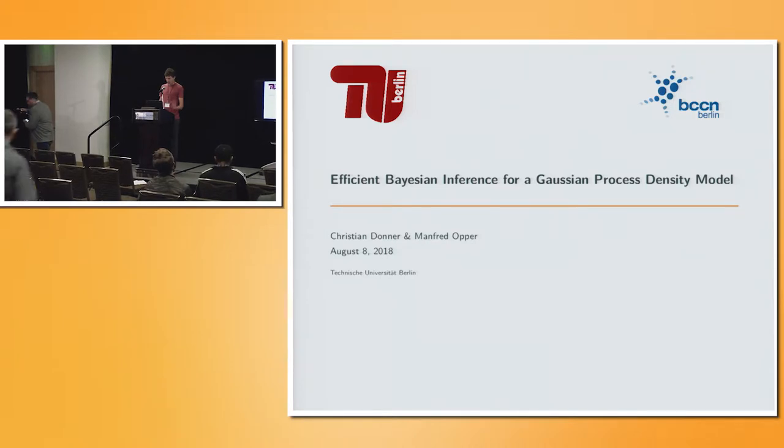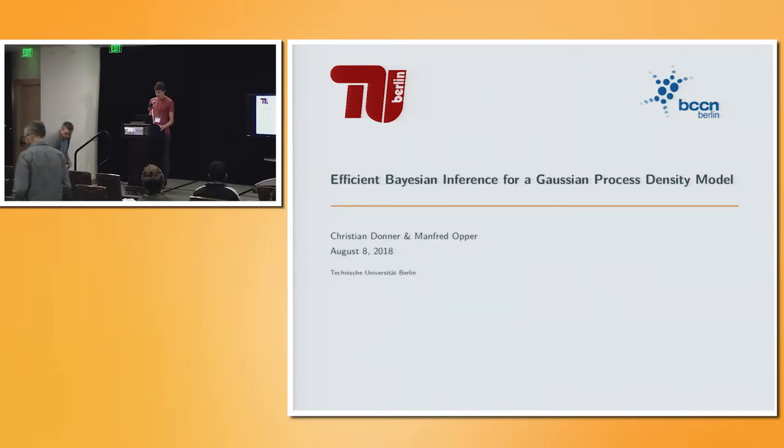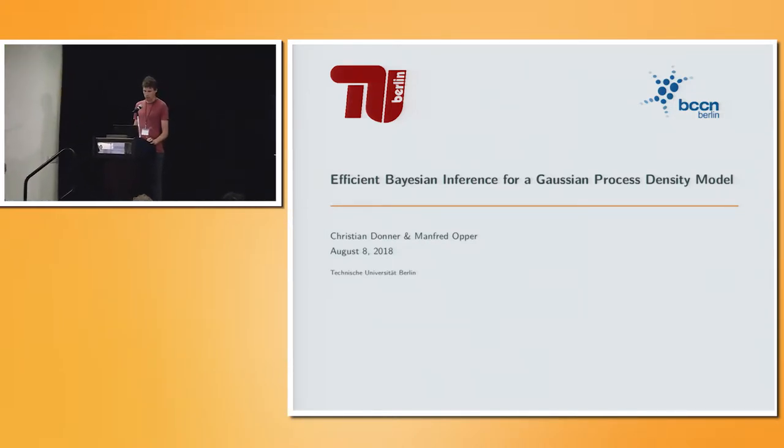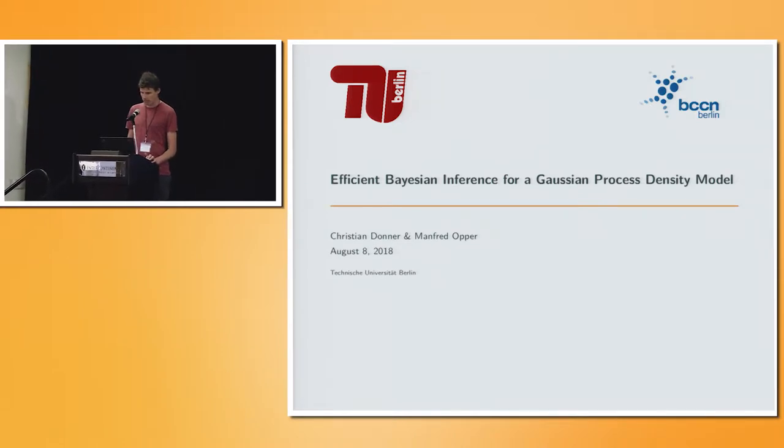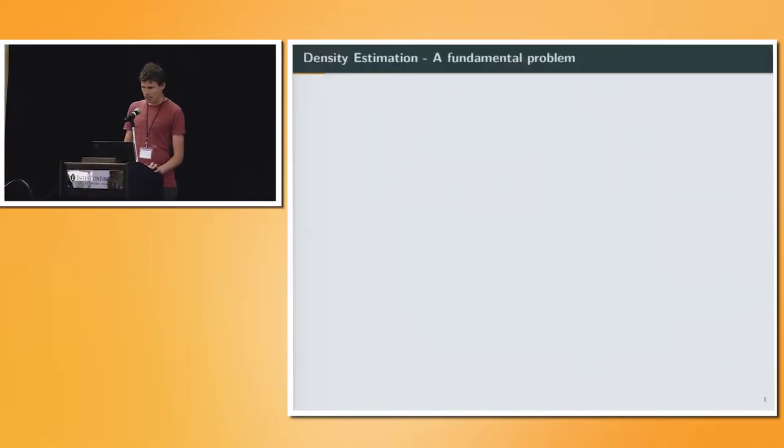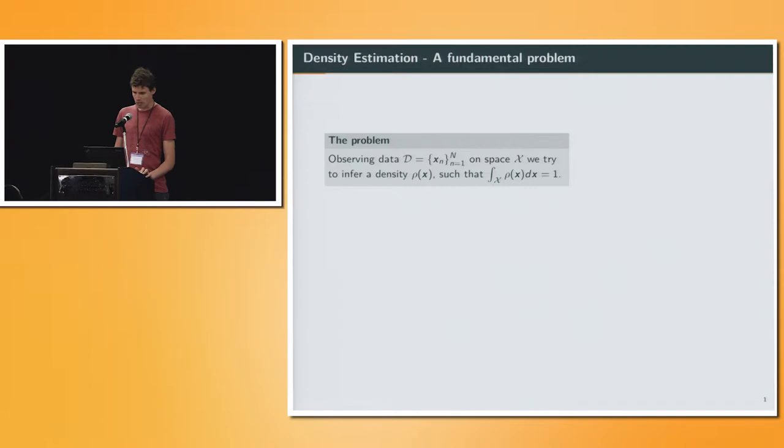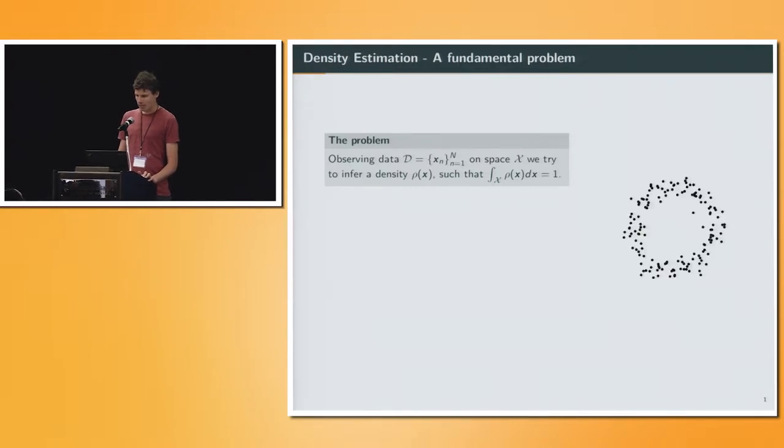So it will be about, as I said, efficient Bayesian inference for Gaussian process density model, and this is work with my PhD supervisor, Manfred Oppa. Density estimation is a fundamental problem where you have some data x which you observe on a certain space, and you basically want to infer a density rho such it's normalized over this space. For example, you have points in a two-dimensional plane, and you want to infer the probability density over it.